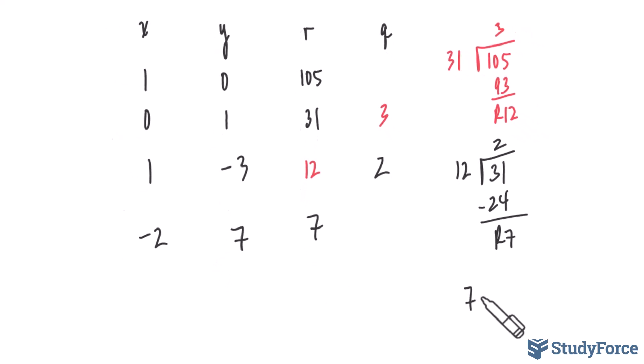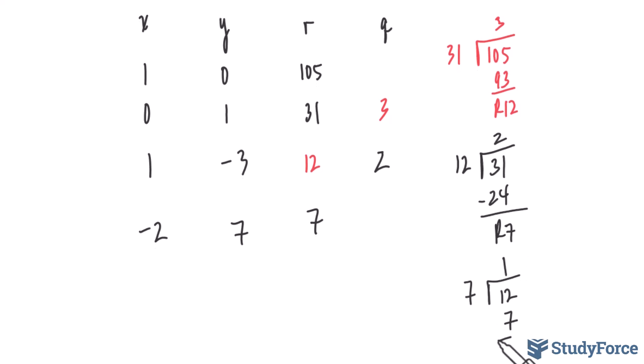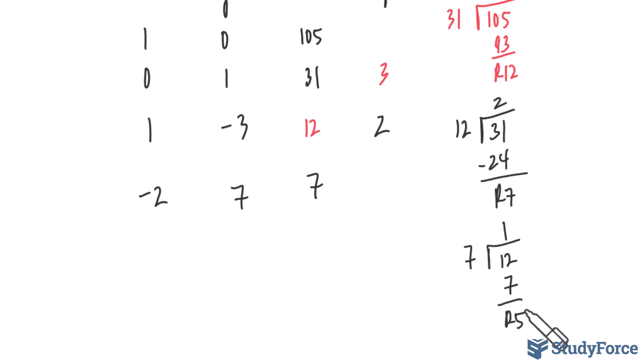Dividing 12 by 7, 7 fits into 12 once and this leads to a remainder of 5. So we put the 1 here and the 5 here. 1 times negative 2 is negative 2. 1 take away negative 2 is positive 3. 1 times 7 is 7. Negative 3 take away 7 is negative 10.